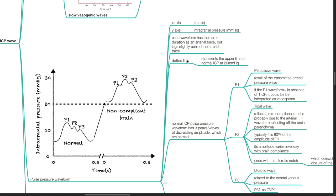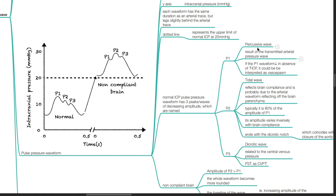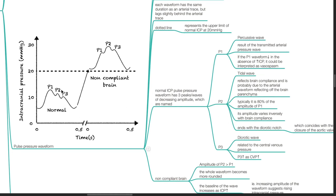The pulse pressure waveform. X axis represents time in seconds, Y axis represents intracranial pressure in mmHg. Each waveform has the same duration as an arterial trace but lags slightly behind the arterial trace. The dotted line represents the upper limit of normal ICP at 20 mmHg. The normal ICP pulse pressure waveform has three peaks or waves of decreasing amplitude named P1, P2, and P3. P1 is the percussive wave, the result of the transmitted arterial pressure wave. If the P1 waveform decreases in the absence of raised ICP, it could be interpreted as vessel spasm. P2, also known as tidal wave, reflects brain compliance and is probably due to the arterial waveform reflecting off the brain parenchyma. Typically it is 80% of the amplitude of P1. Its amplitude varies inversely with brain compliance. It ends with the dicrotic notch which coincides with the closure of the aortic valve.